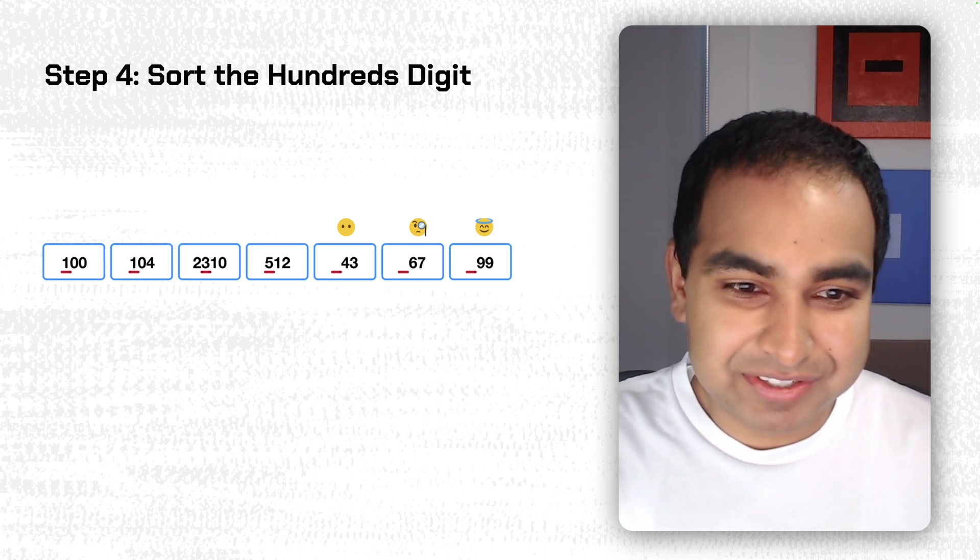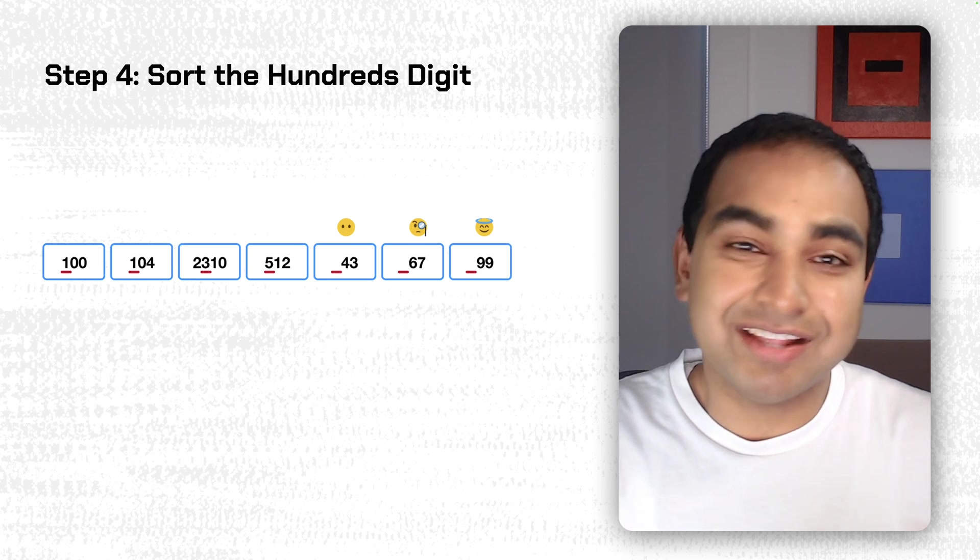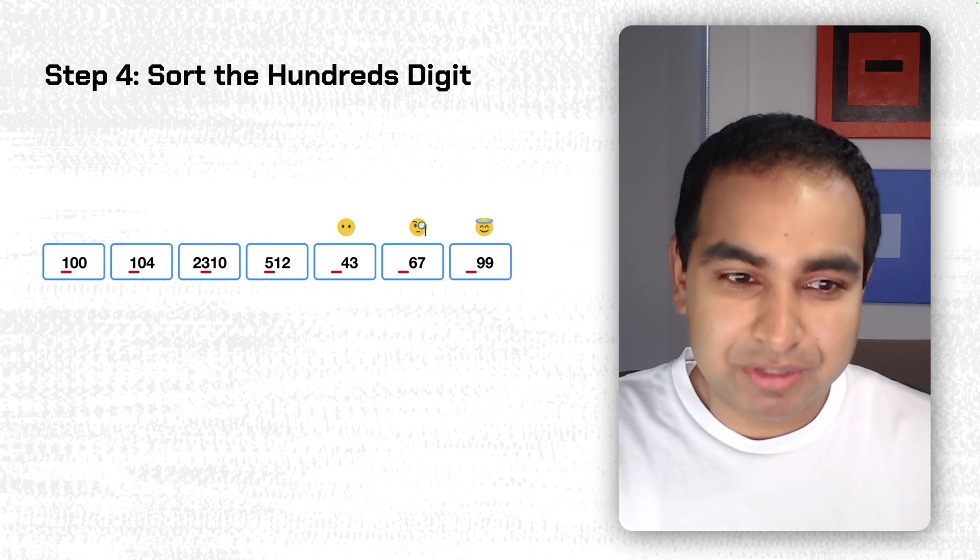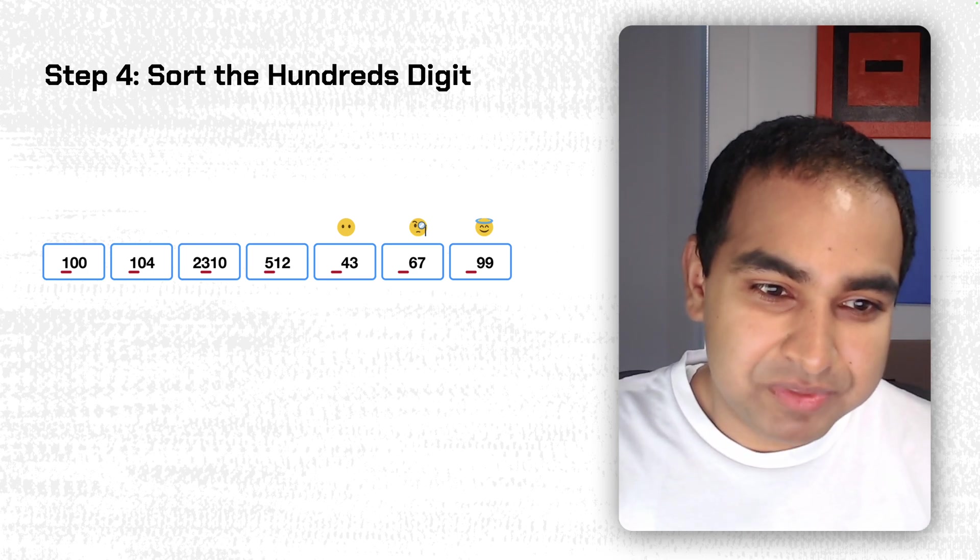they do not have a 100s digit, their largest number is going to be in the 10s. And so what we do in these cases is imagine there's a zero there. So we just leave it blank, but we imagine that it happens to be a zero.